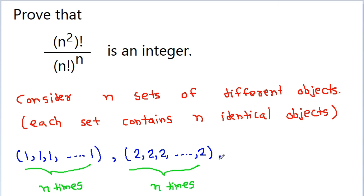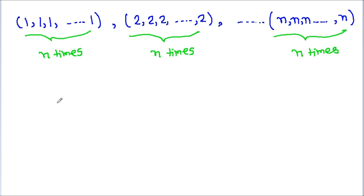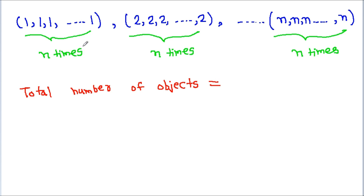And similarly, the nth set may be n, n, n, and n — total n times. Now, if we try to find the total number of objects, we have n sets and in each set we have n objects. So, total number of objects will be n square.